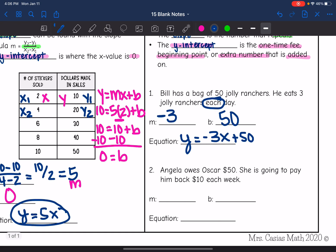Let's look at the next one. Angela owes Oscar $50. She is going to pay him back $10 each week. So Angela owes Oscar $50. That means she is down $50. She has a negative $50. That's where she's starting at. And then she's going to pay him back $10 each week. So that's going to be a positive 10 that she's adding to that $50 that she owes him. So then our equation to represent this situation would be y equals 10x minus 50.